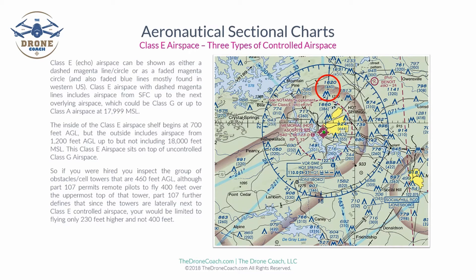You would be restricted to 240 feet because it is underneath that Class E airspace. Down here to the southwest, the same thing applies — although it's close, you could not simply add 400 feet to that 330 feet AGL. You'd be penetrating into the bottom of that Class E airspace, so you would be limited to 370 feet maximum.